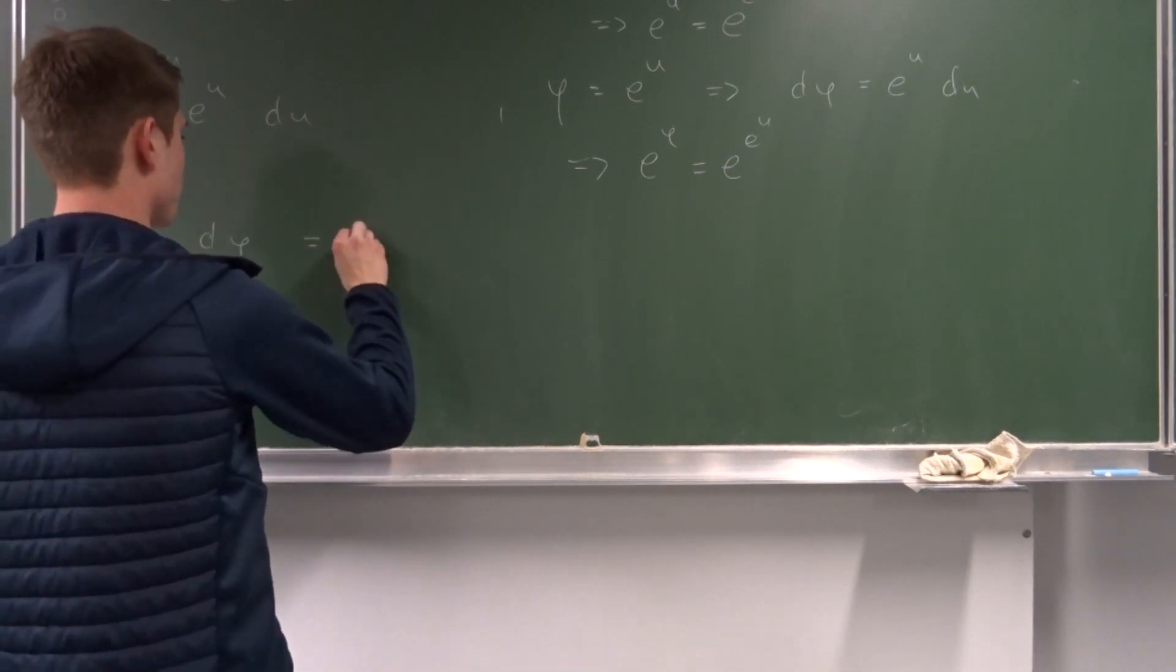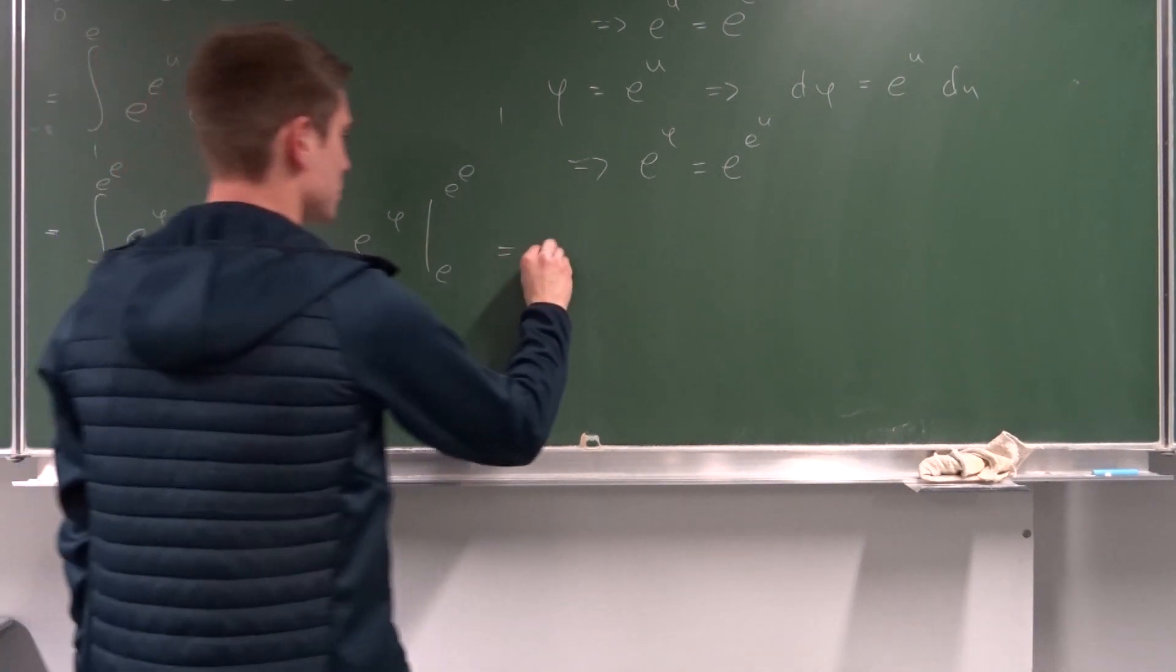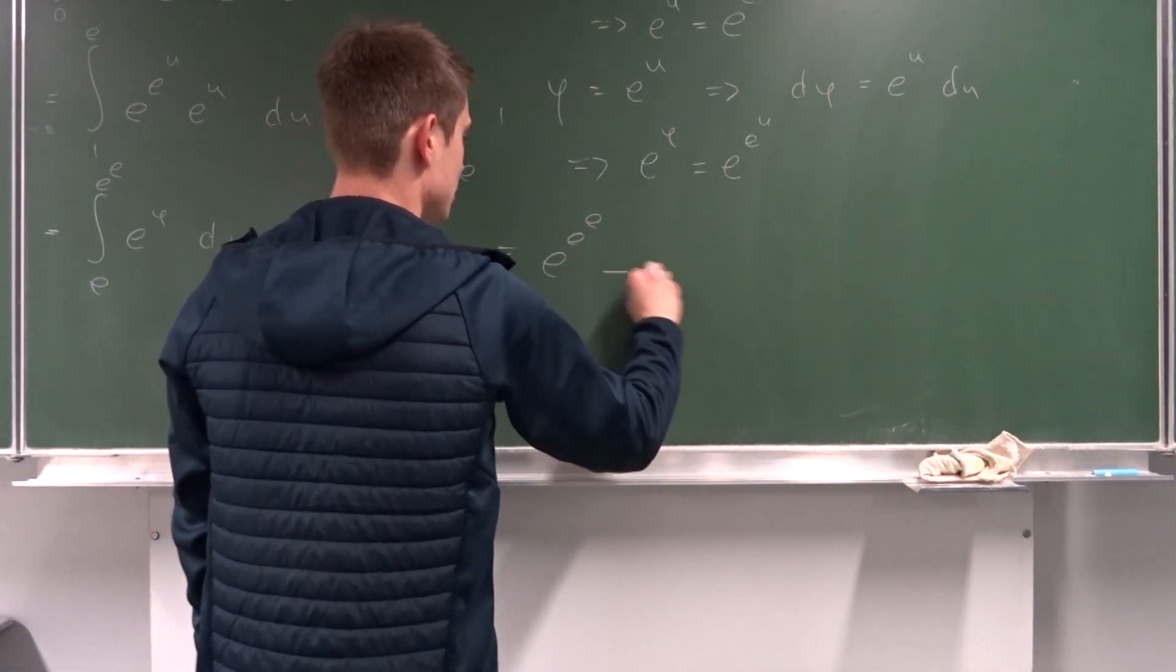So, this is just e to the phi from e to e to the e. And we can plug this in. So, that's e to the e to the e minus e to the e.